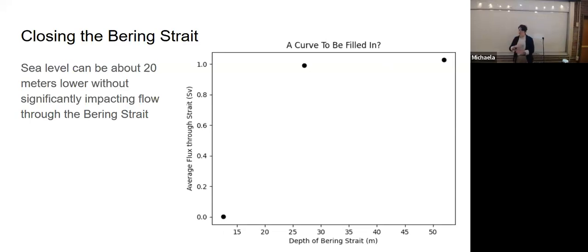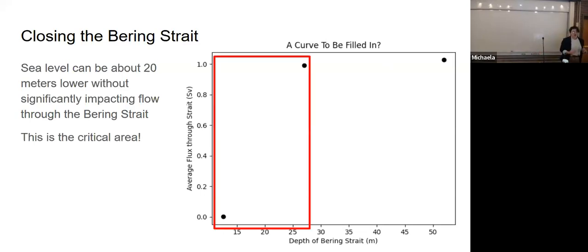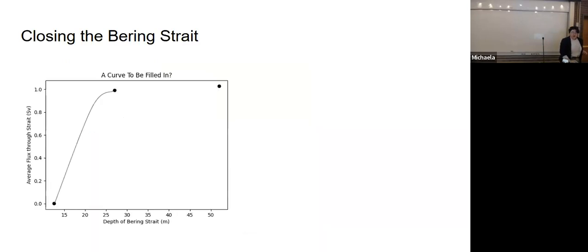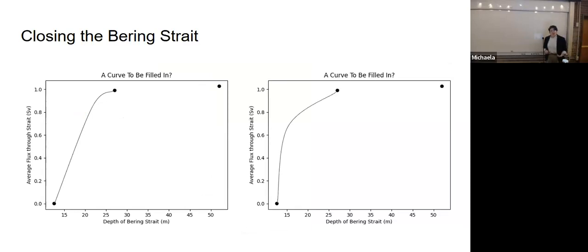If the Bering strait is 10 meters deep, no water gets through it, essentially. This is really the critical area. What we want to figure out is what this looks like. At what point does water stop flowing through the Bering strait? We know now it's between about 10 and 25 meters, but we don't know where that critical point is. You could imagine a couple different situations. These are two very different stories in two very different climate situations.